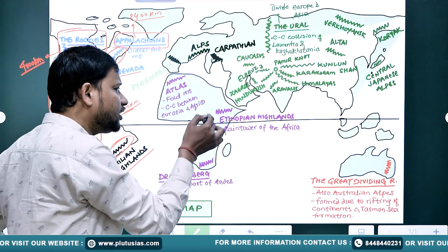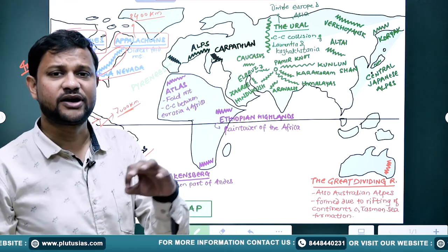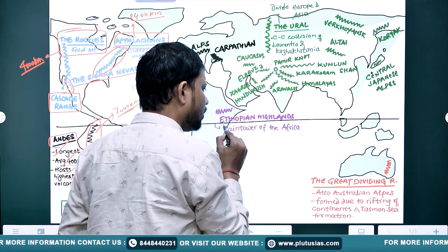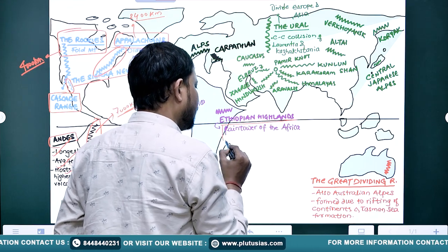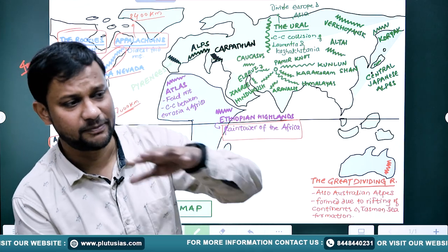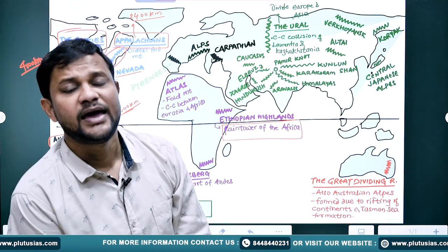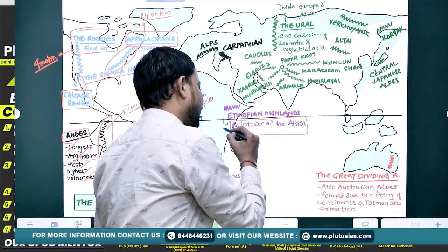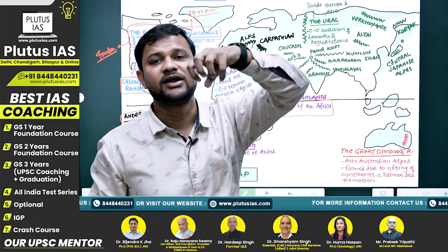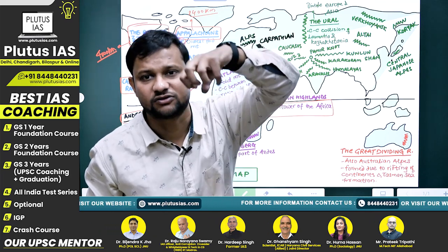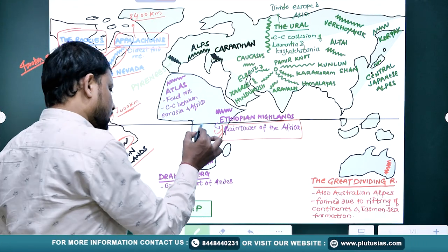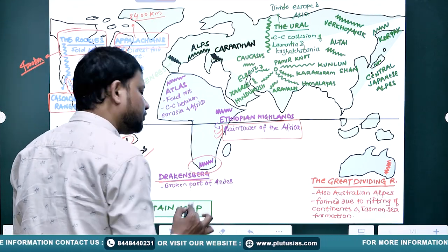Next, in Africa, we shall remember three to four names. The Ethiopian Highlands — these can be considered a plateau with a flat top surface — is known as the 'rain tower of Africa.' It is called the rain tower because different rivers originate from there; drainage systems originate there and move further onward.